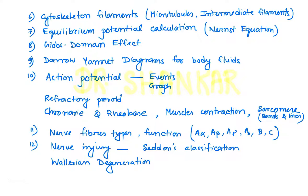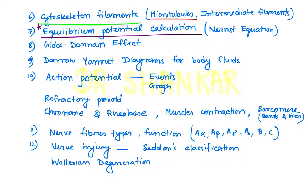Next, cytoskeleton filaments are important: microtubules like kinesin or dynein, tubulin, etc.; intermediate filaments like cytokeratin, desmin; different types of markers of malignancy related to intermediate filaments — you should know these very well. Then equilibrium potential is very important — questions for exams like AIIMS examination and INICT. You can expect one question related to equilibrium potential calculation. It is repeatedly asked in AIIMS examination. Next, you should know the Gibbs-Donnan effect, the Nernst equation, and the Goldman equation.